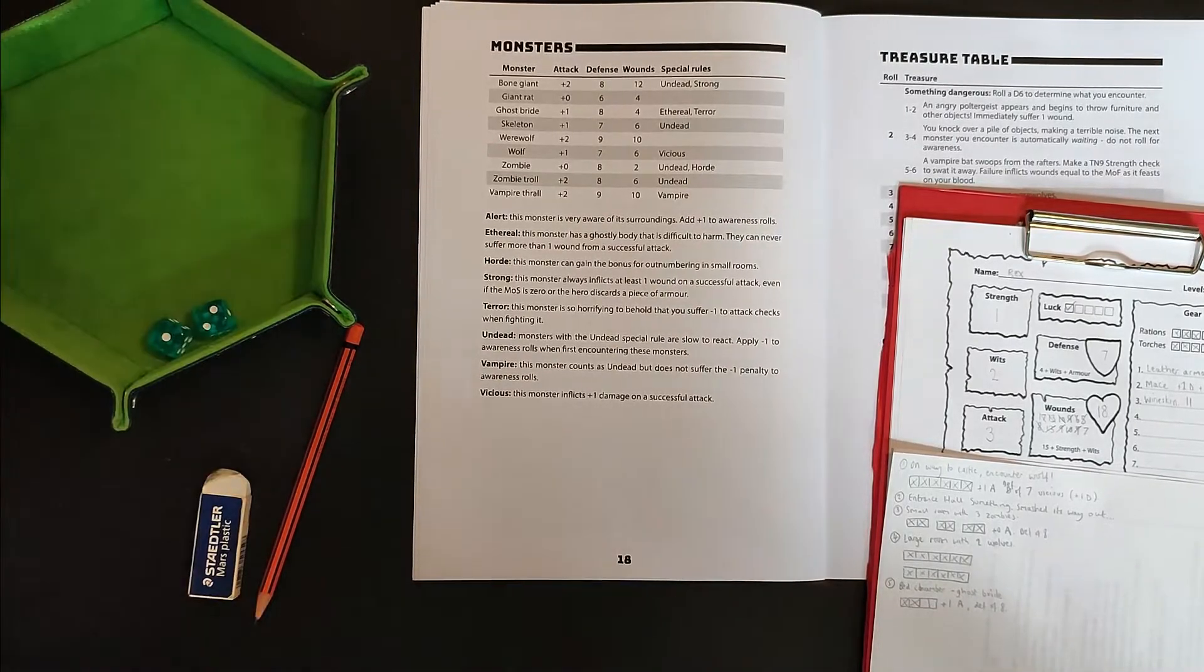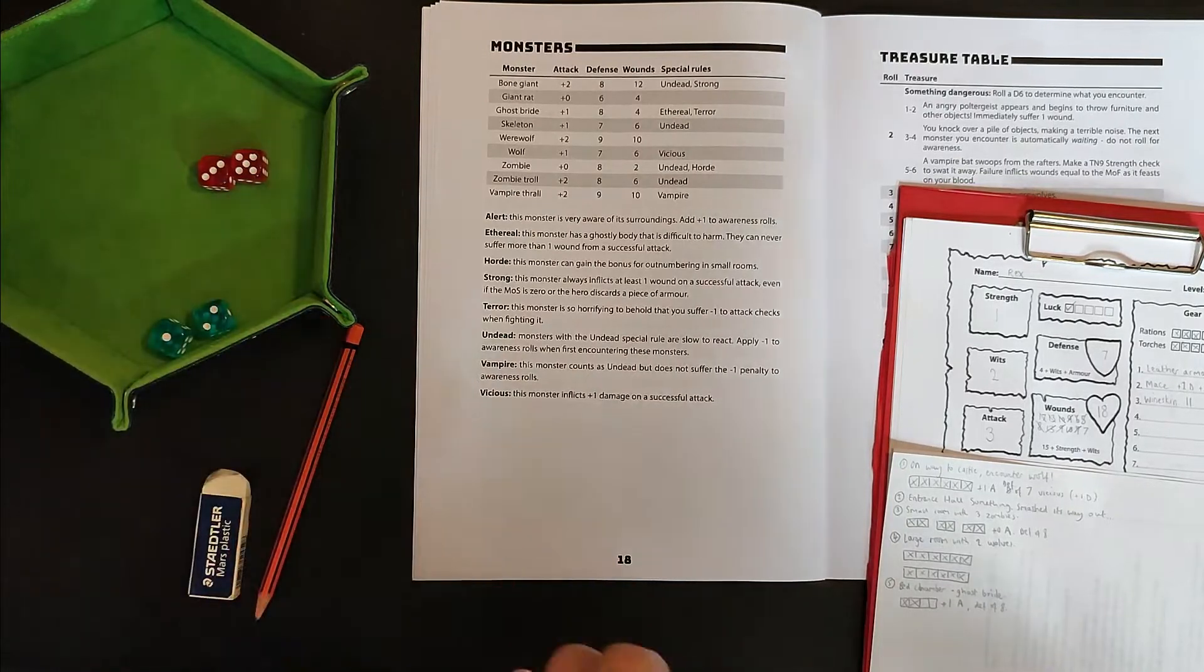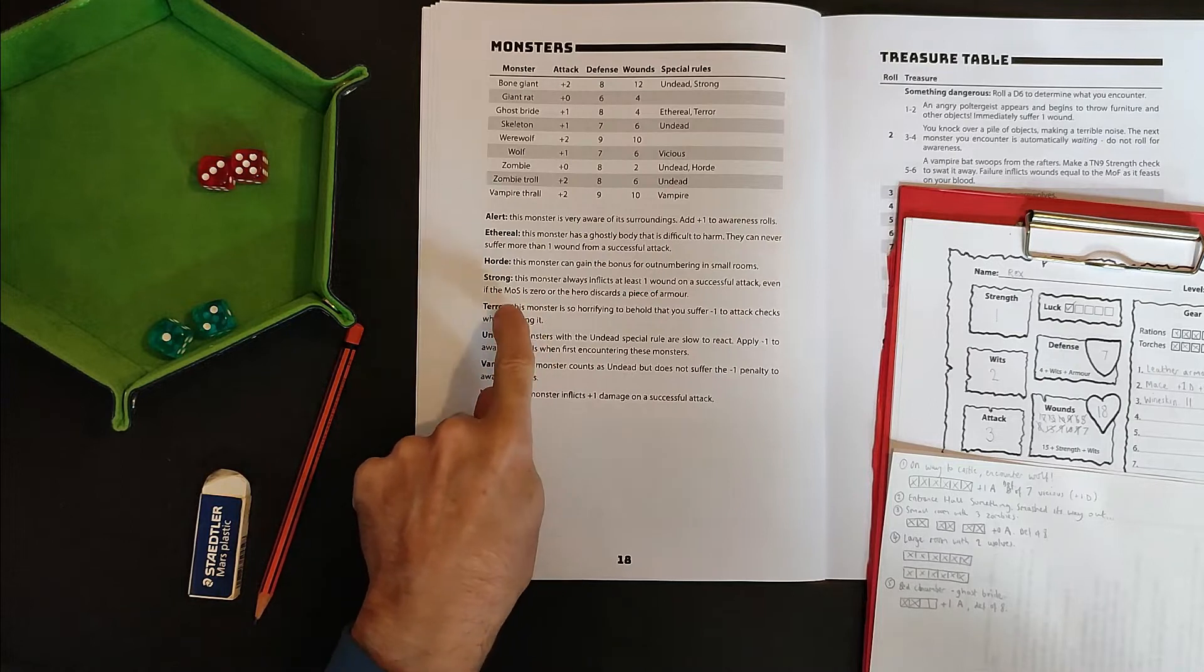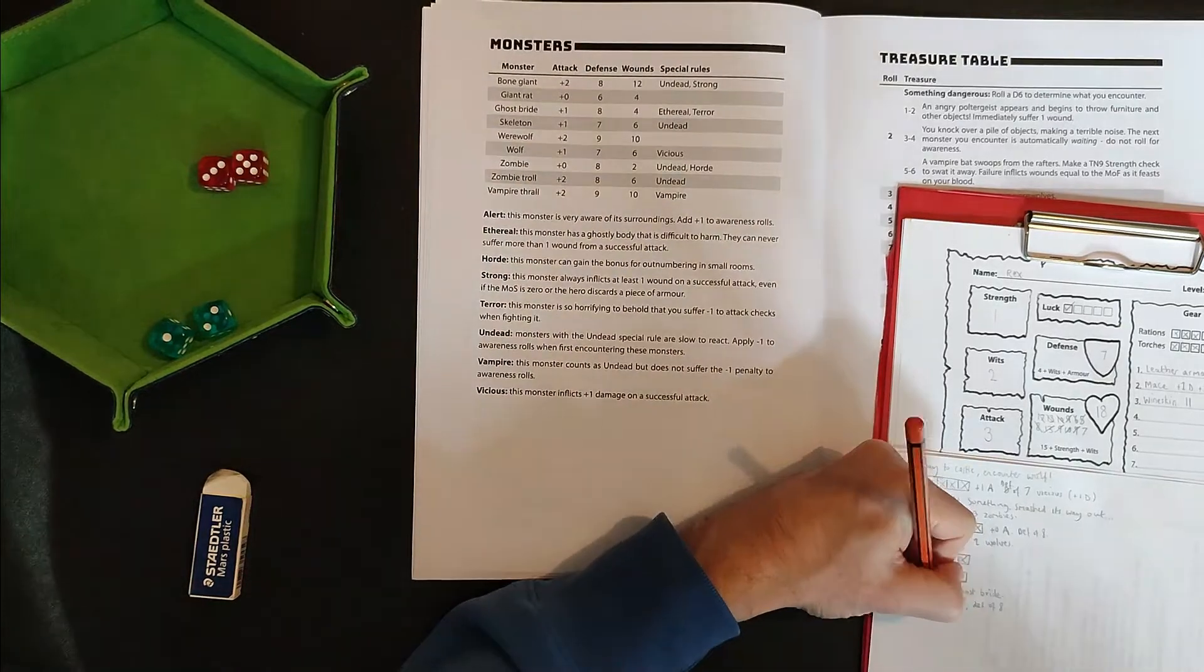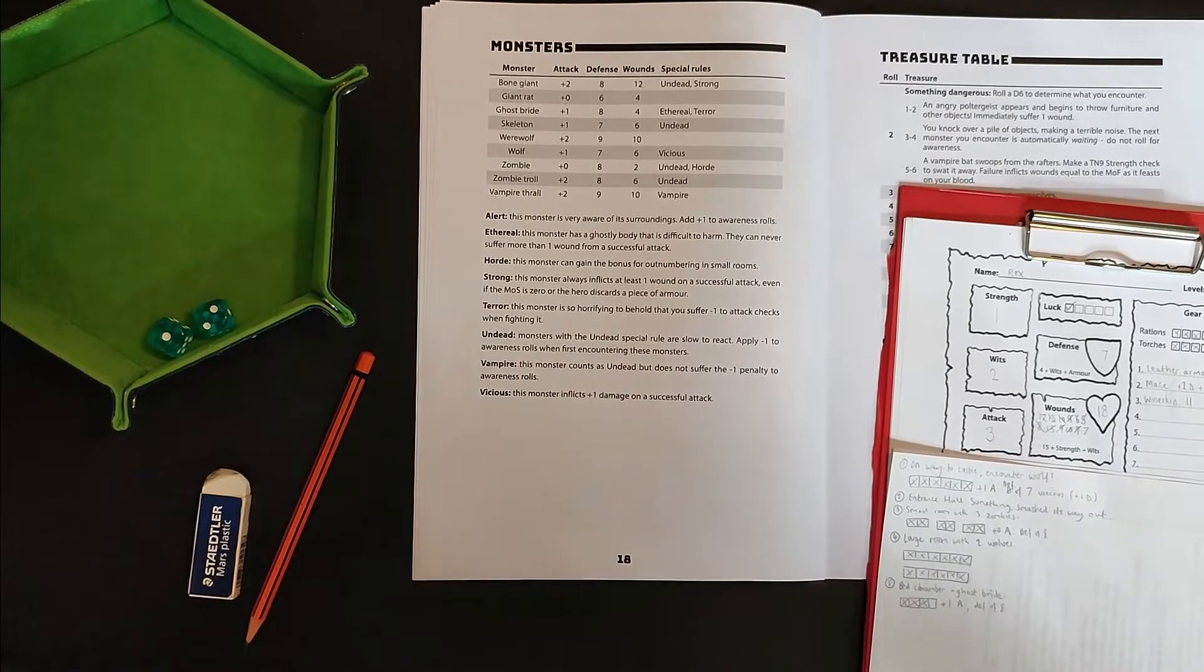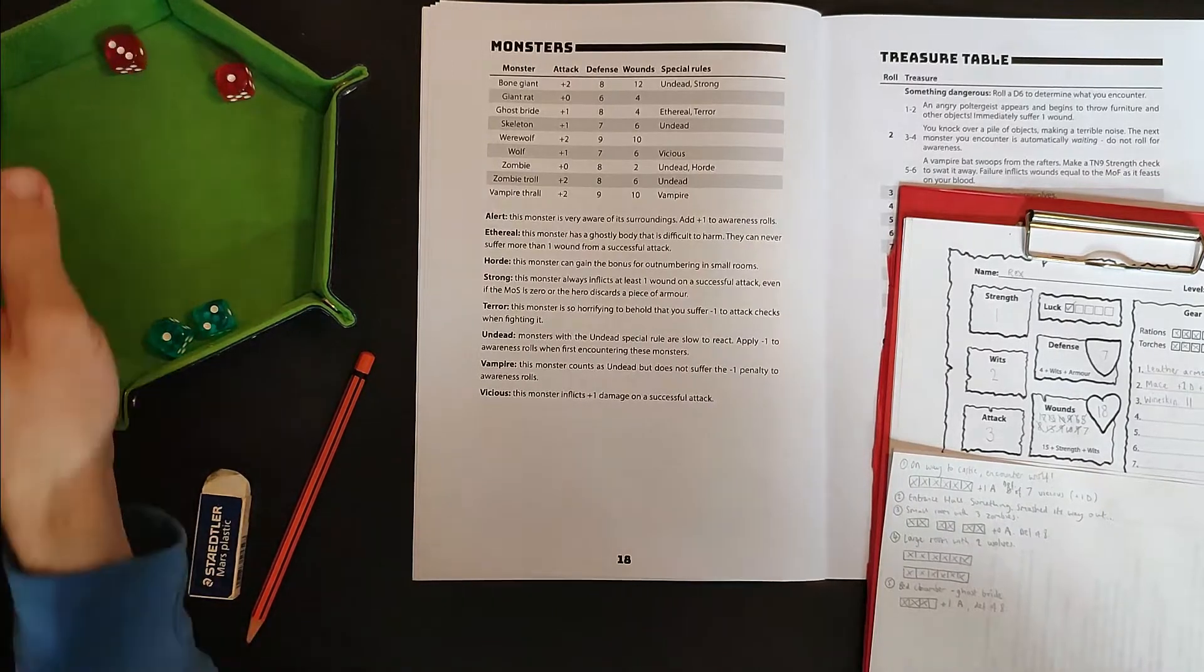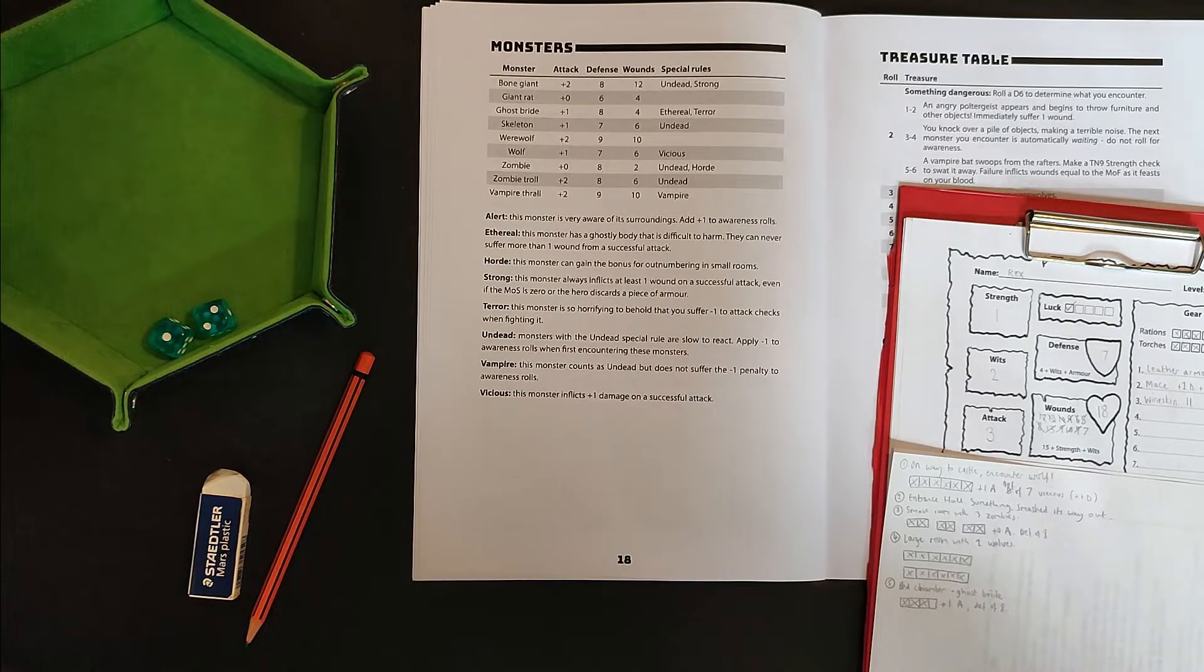Eight, nine, 10, 11, less one for the terror is 10, which gives me a margin of success of two, enough to do a point of damage. Only one to go. But before I get to attack again, the ghost bride attacks me. Oh, low. Thank you, dice. Thank you for being nice to me. Okay. So I get to do an attack.